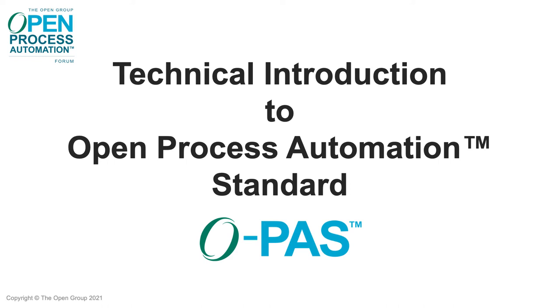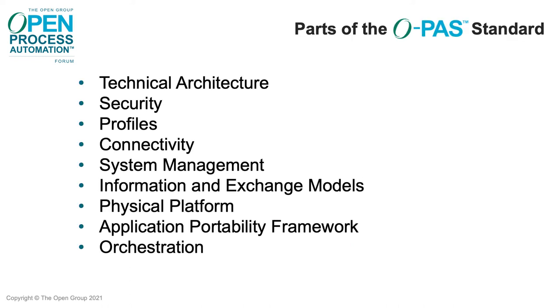The Open Process Automation specification is divided into parts, shown here. Version 2.1 focuses on the black one; the gray ones are planned for the future.